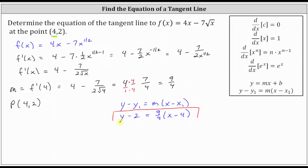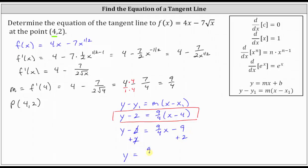If we were asked to give the equation in slope-intercept form, we would distribute 9/4 and then add 2 to both sides. Distributing 9/4, we have 9/4 times x, which is (9/4)x, and then minus 9/4 times 4, which gives us 9. Then to solve for y, we add 2 to both sides, giving us y = (9/4)x minus 7.